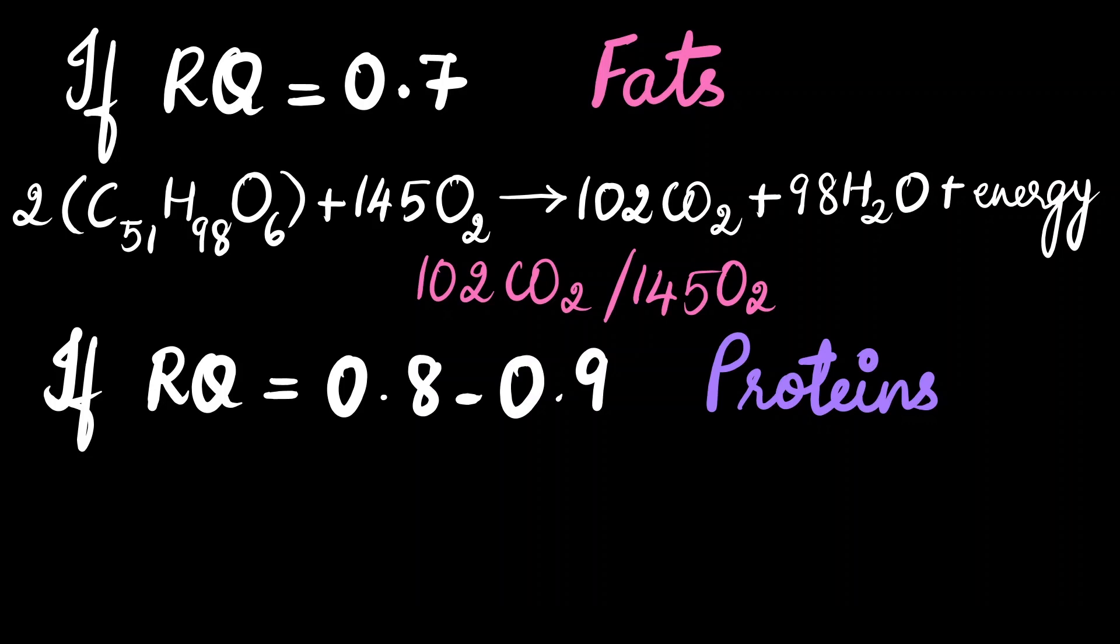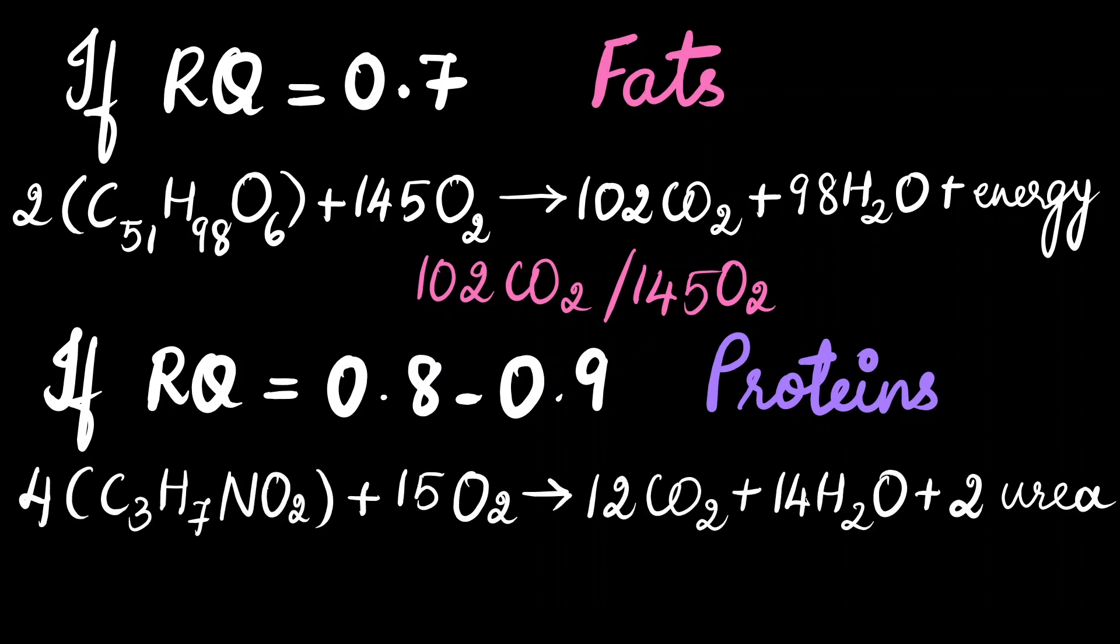let's take the example of metabolism involving just one amino acid. So, for example, let's take alanine, okay? So, the chemical equation would look something like this. Also, protein metabolism usually gives rise to nitrogenous waste. So, there is evolution of urea. It is the non-nitrogenous components of the amino acid which is giving rise to the carbon dioxide and water. So, when we repeat the RQ calculations over here, we end up with the value of 0.8.